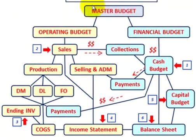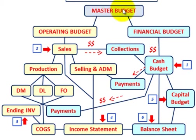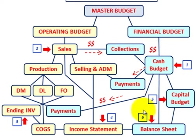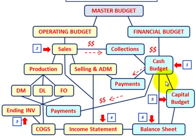For our budgeting purposes, we start out with our master budget, and then under our master budget we have our operating budget and our financial budget. This balance sheet budget is the last budget we have to develop under the master budget. It is included under our financial budget, which includes our cash budget and our capital budget.